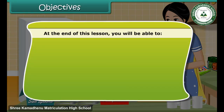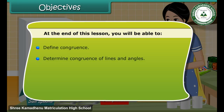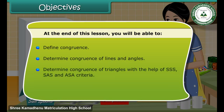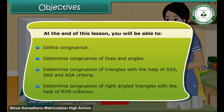At the end of this lesson, you will be able to: define congruence; determine congruence of lines and angles; determine congruence of triangles with the help of SSS, SAS, and ASA criteria; determine congruence of right-angled triangles with the help of RHS criterion.